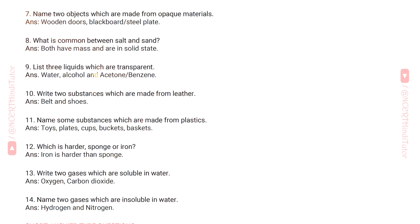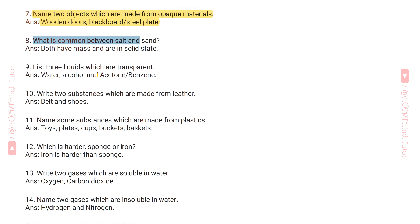Question 7: Name two objects which are made from opaque materials. Answer: Wooden doors, blackboard, steel plate. Question 8: What is common between salt and sand? Answer: Both have mass and are in solid state.